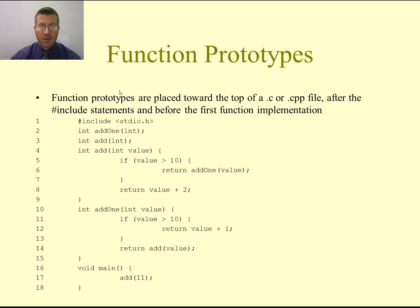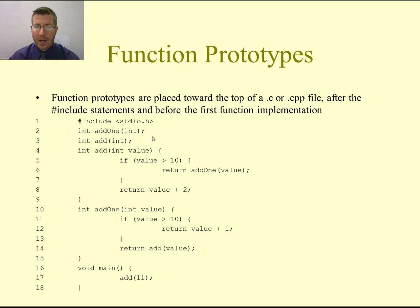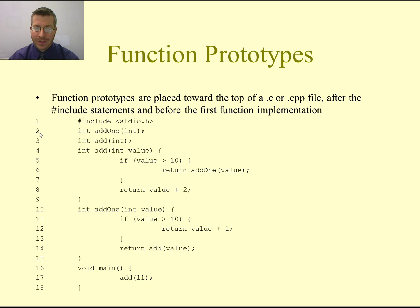We put the function prototypes at the top of our code — you see on this slide, lines two and three. They appear immediately after all of our preprocessor directives, which are the lines that start with the pound sign. Now we are able to order the functions in our code in whatever order we would like. So now we can have both the add and the add1 functions, which call each other, and put them in any order, because the compiler will come through the code and recognize the prototypes.